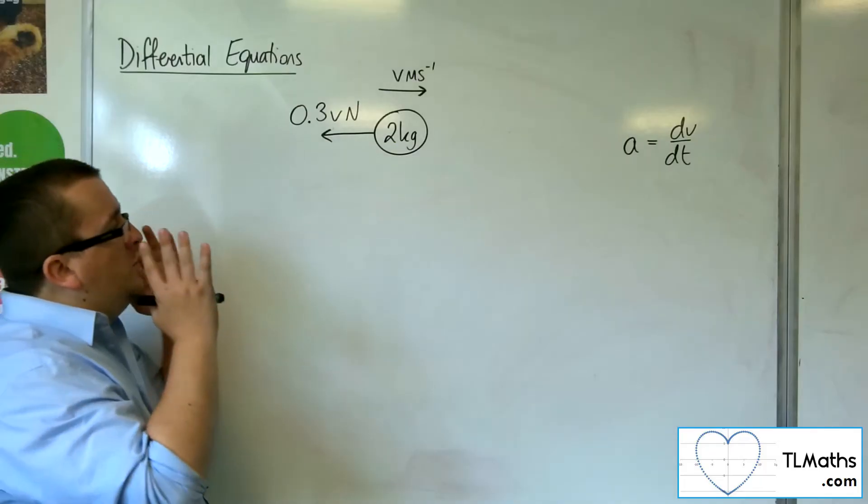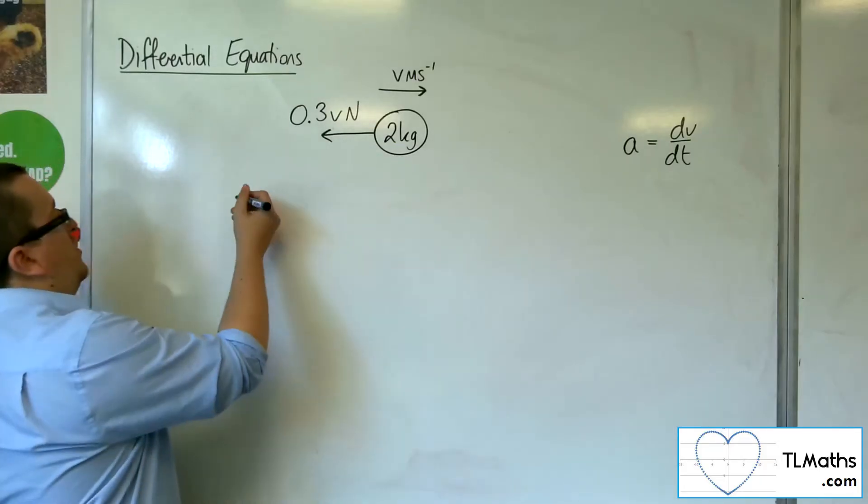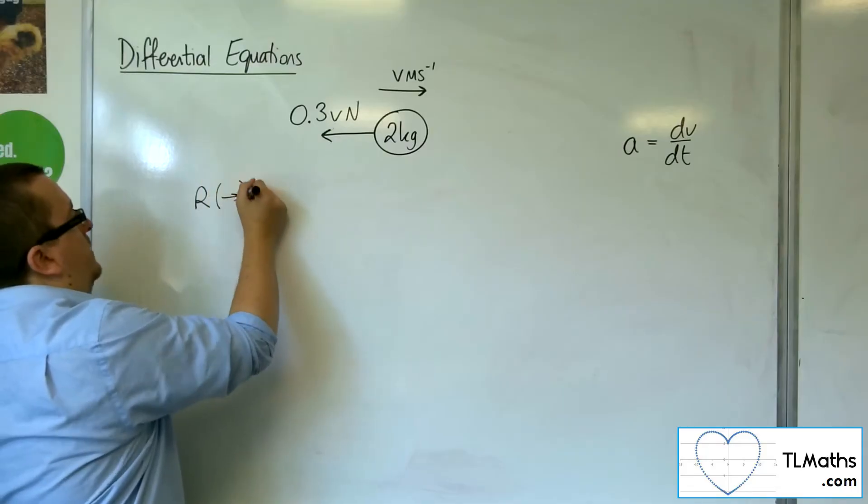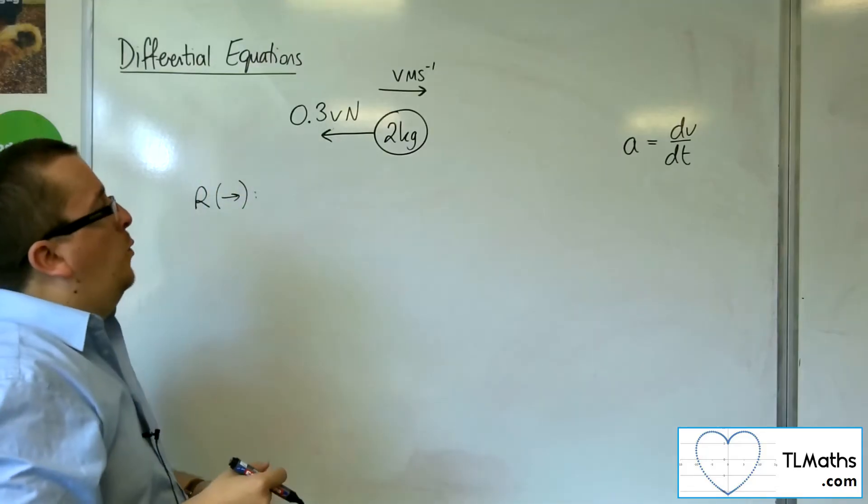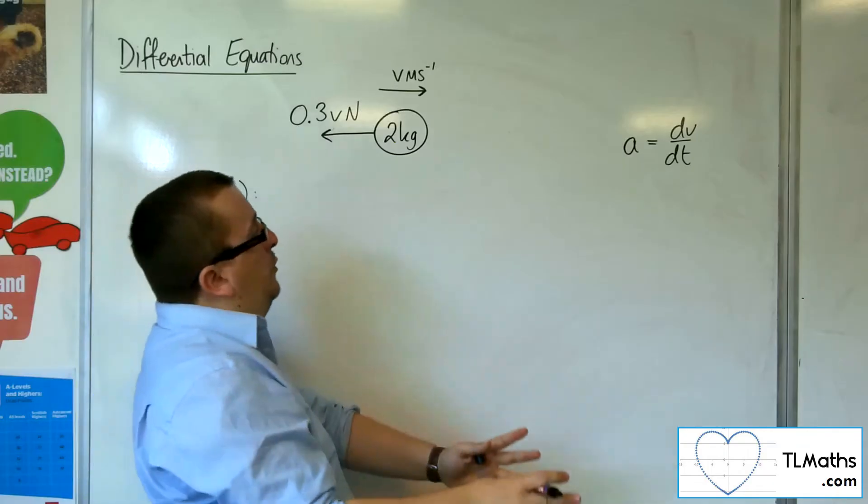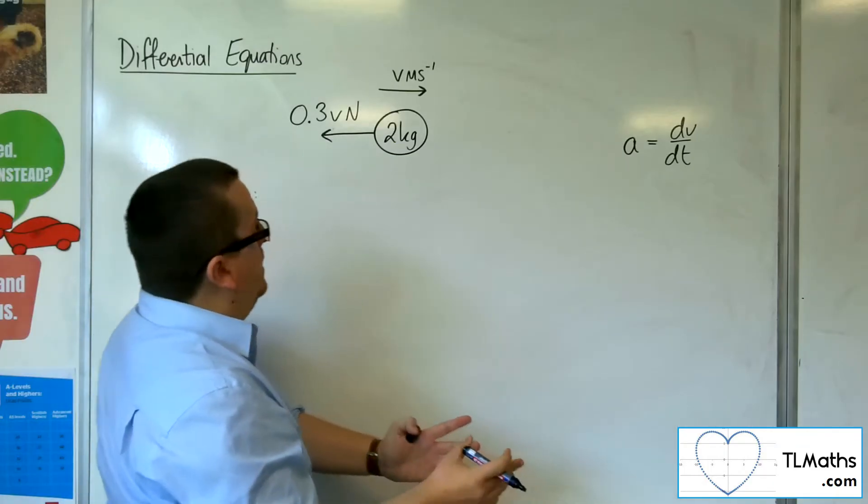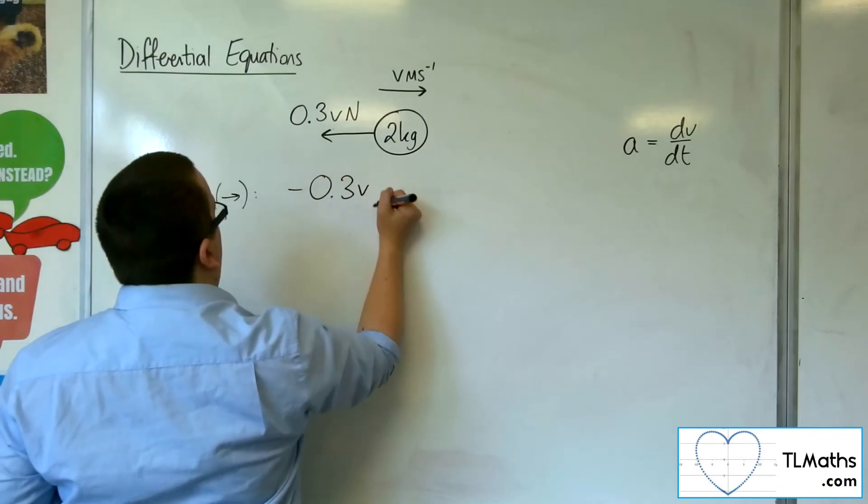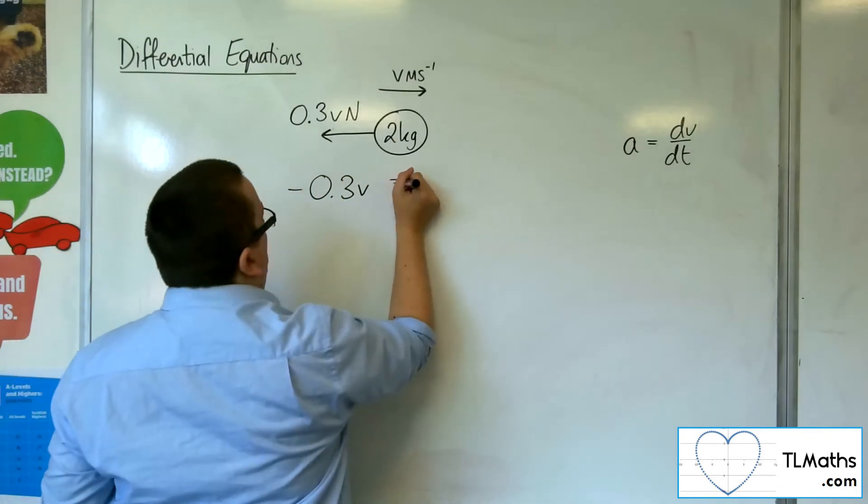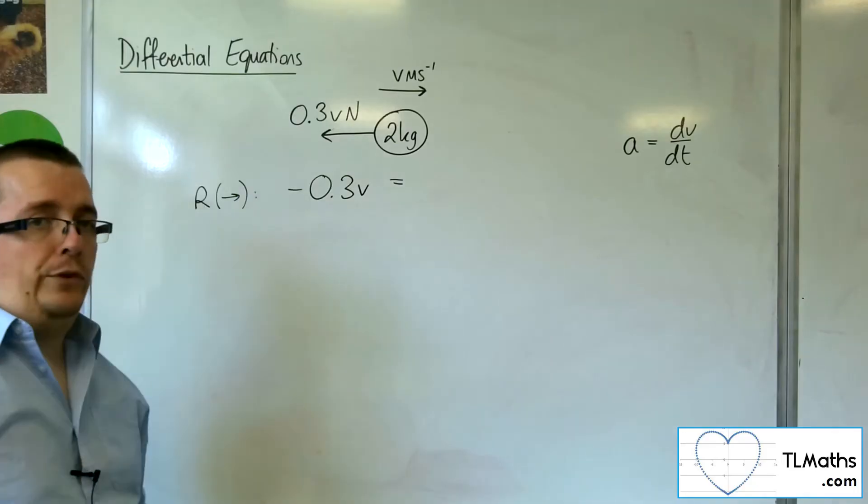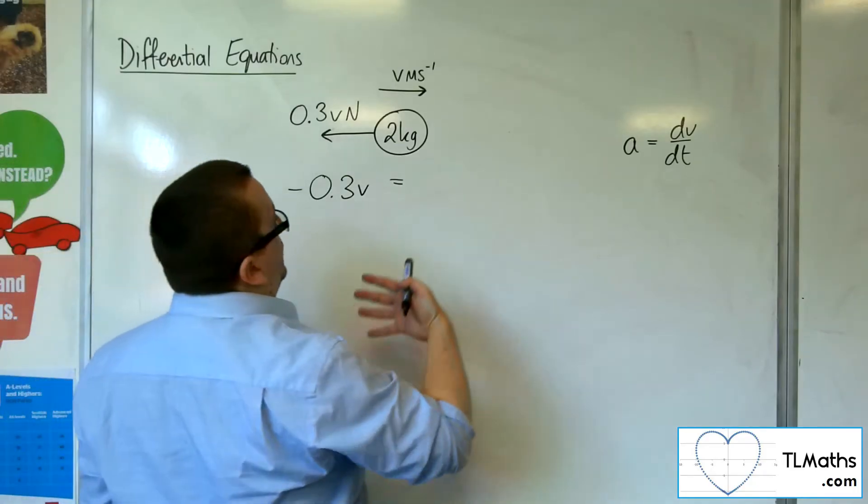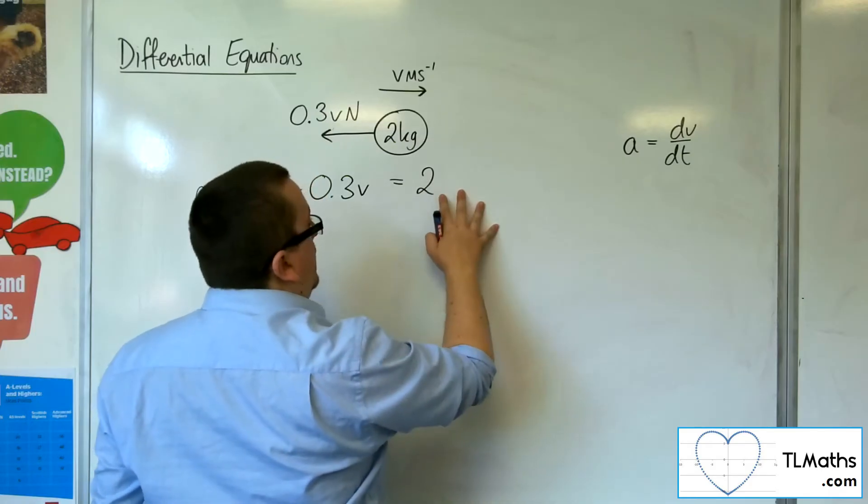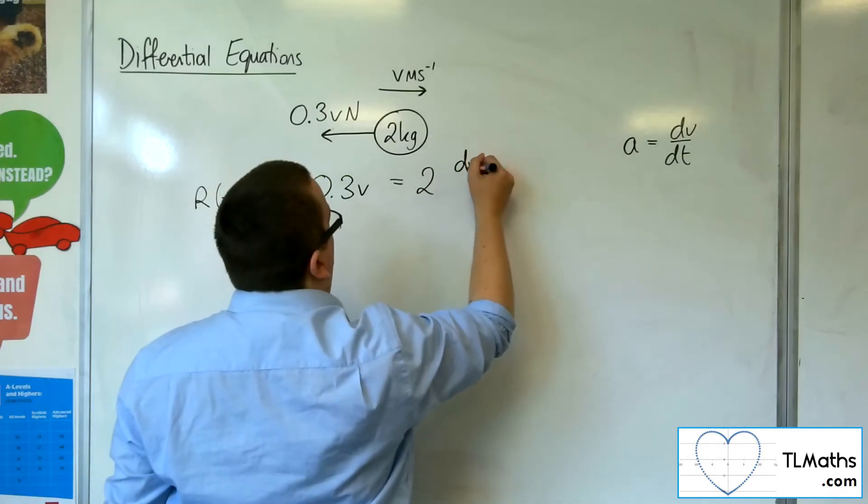So we're going to take to the right as positive. If we resolve it that way, resolving to the right, then what I've got is I don't have any forces working in that direction, but I do have the minus 0.3v working to the left. So this is my net force. And that's got to be equal to the mass 2 times the acceleration, which I'm going to write as dv by dt.